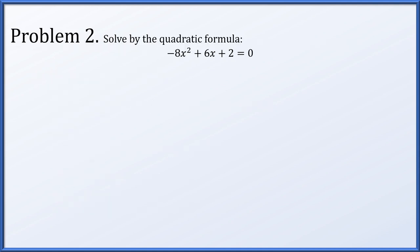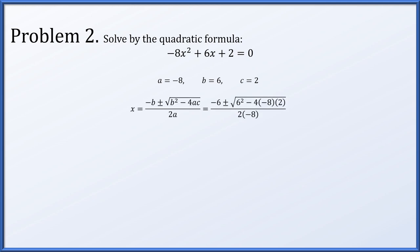Problem 2. Let's solve using the quadratic formula. Negative 8x squared plus 6x plus 2 should be equal to 0. We identify that the coefficient of our quadratic term is negative 8, the coefficient of our linear term is 6, and our constant term is 2. In the quadratic formula, these are represented as little a, b, and c. The quadratic formula states that x equals negative b plus or minus the square root of b squared minus 4ac all over 2a.